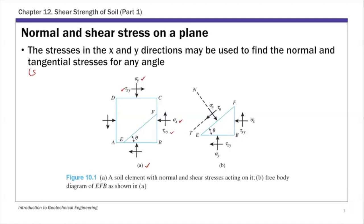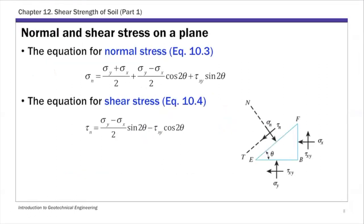The tangential stress is basically the shear stress. This is the normal stress sigma_n, and tau_n is the shear stress on any plane at angle theta. Theta is measured from the horizontal direction. The way to derive tau and sigma on this plane is to use force balance — summing forces in the horizontal and vertical directions using equilibrium. This gives equations 10.3 and 10.4 for sigma_n and tau_n.